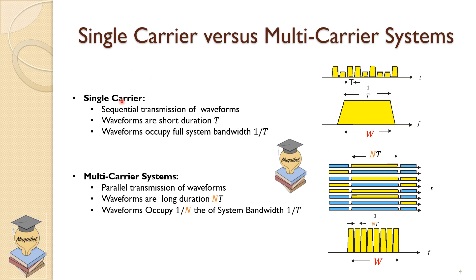And that's the usual trend. We have one carrier usually centered at the bandwidth of the transmission. Sequential transmitter of waveforms, one after the other, waveforms are short duration capital T. And then the waveform occupies the bandwidth, which is inversely related to the duration.